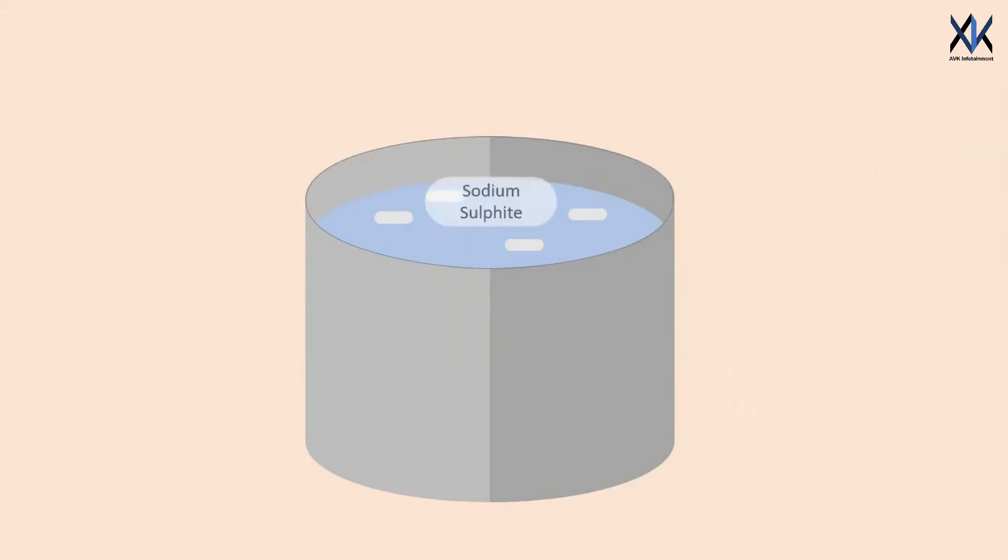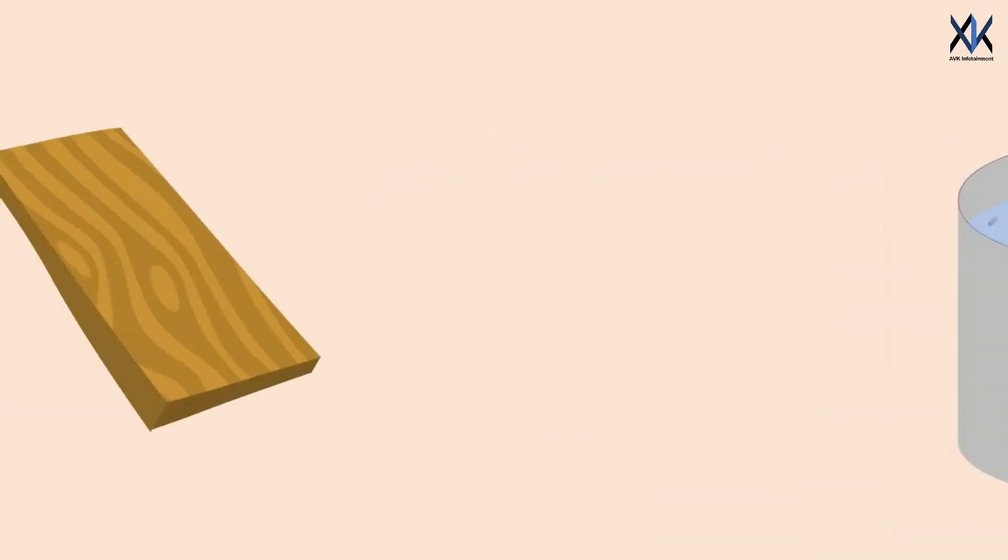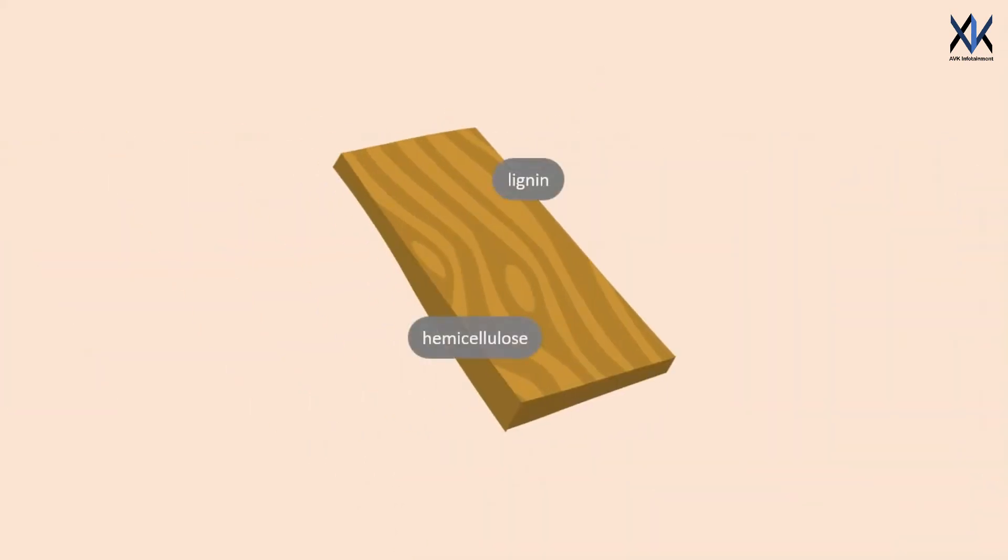First you boil the wood in a solution of sodium hydroxide and sodium sulfide. That removes much of the wood's lignin and hemicellulose, two polymers that stiffen the plant cell walls, but leaves another polymer, cellulose, intact.